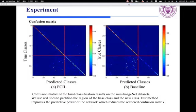Secondly, we show the confusion metrics. We use heatmaps to visualize the partition of the base classes and the new classes. Our method improves the predictive power of the network, which reduces the off-diagonal confusion metric.